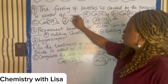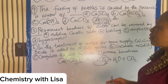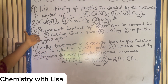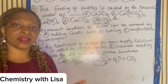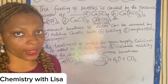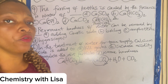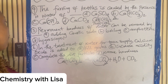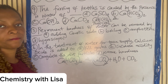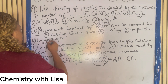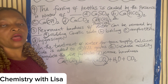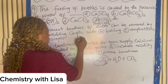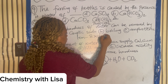Number five: permanent hardness of water can be removed by what? Temporal hardness can be removed by boiling; permanent hardness can be removed by several ways. One is by adding caustic soda. Another is by the use of ion exchange resin. These are the various ways of removing permanent hardness.